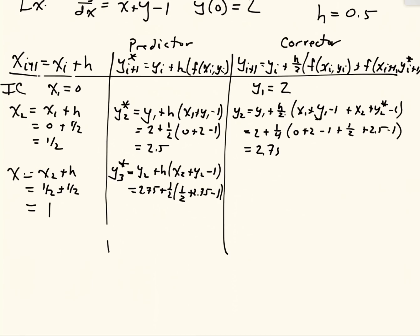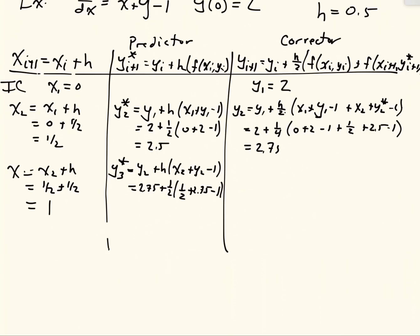Now be careful here because a lot of people want to use y_2 star instead of y_2. y_2 star values are always intermediate values, they're never the actual solution, so you've never used them after the step that it's on. So all these are actual y_2 values.